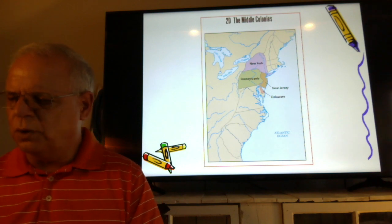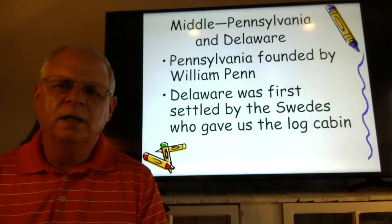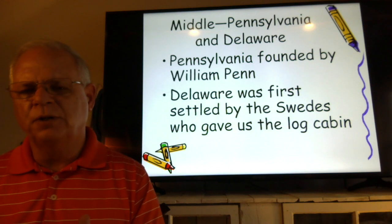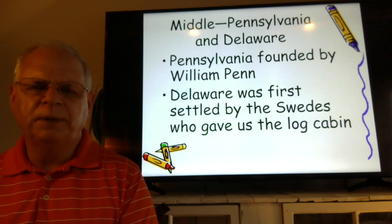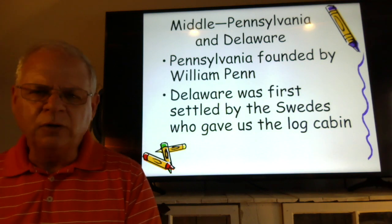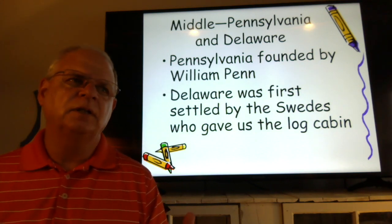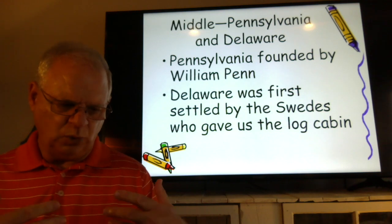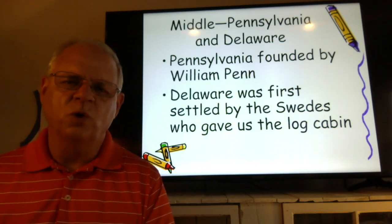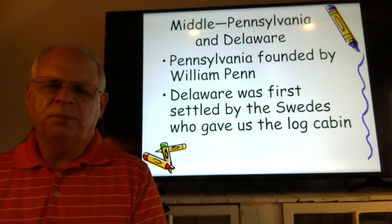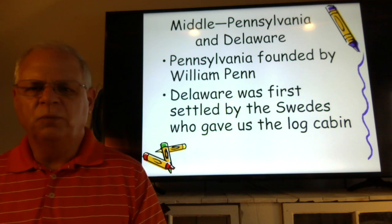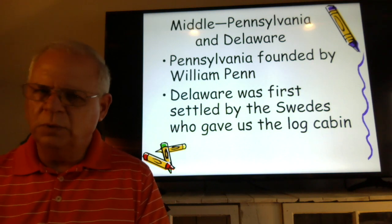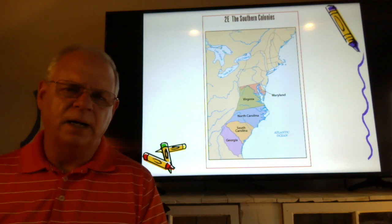The middle colonies — New York, Pennsylvania, New Jersey, and Delaware — appear here on the map. Since New York and New Jersey were already covered in Chapter 1 notes, we focus on Pennsylvania and Delaware. Pennsylvania was founded by William Penn, a Quaker. The king of England owed William Penn's father money, and to pay off that debt, he let William Penn establish a colony for Quaker beliefs. Delaware was first settled by the Swedes, who gave us the log cabin, and it was eventually part of the territory taken from them by the English.